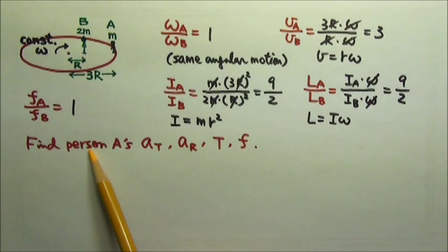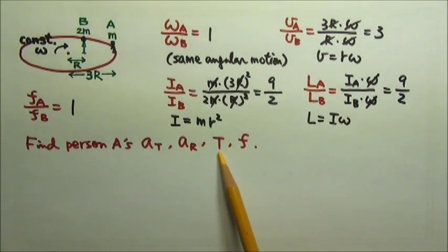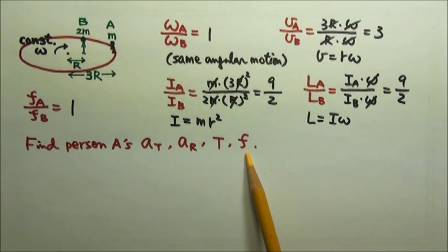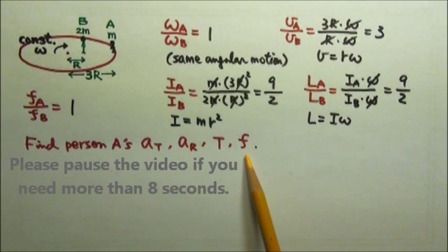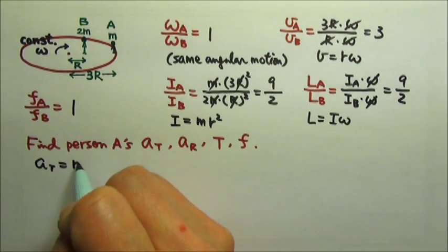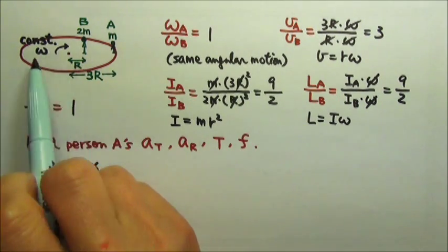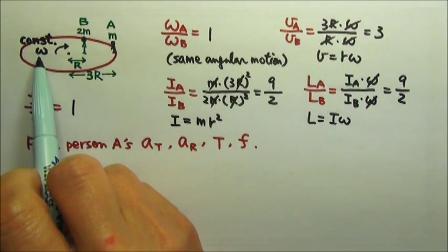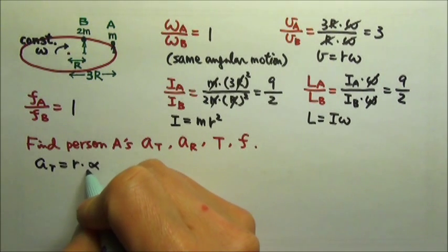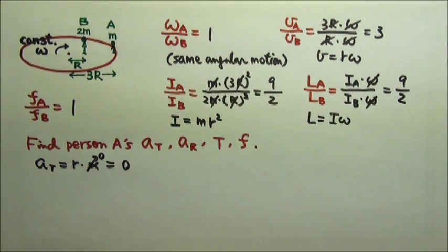Now let's find person A's tangential acceleration, radial acceleration, period, and frequency. The tangential acceleration is r times alpha. Because the merry-go-round rotates at constant angular velocity, there is no angular acceleration, so the tangential acceleration is also 0.